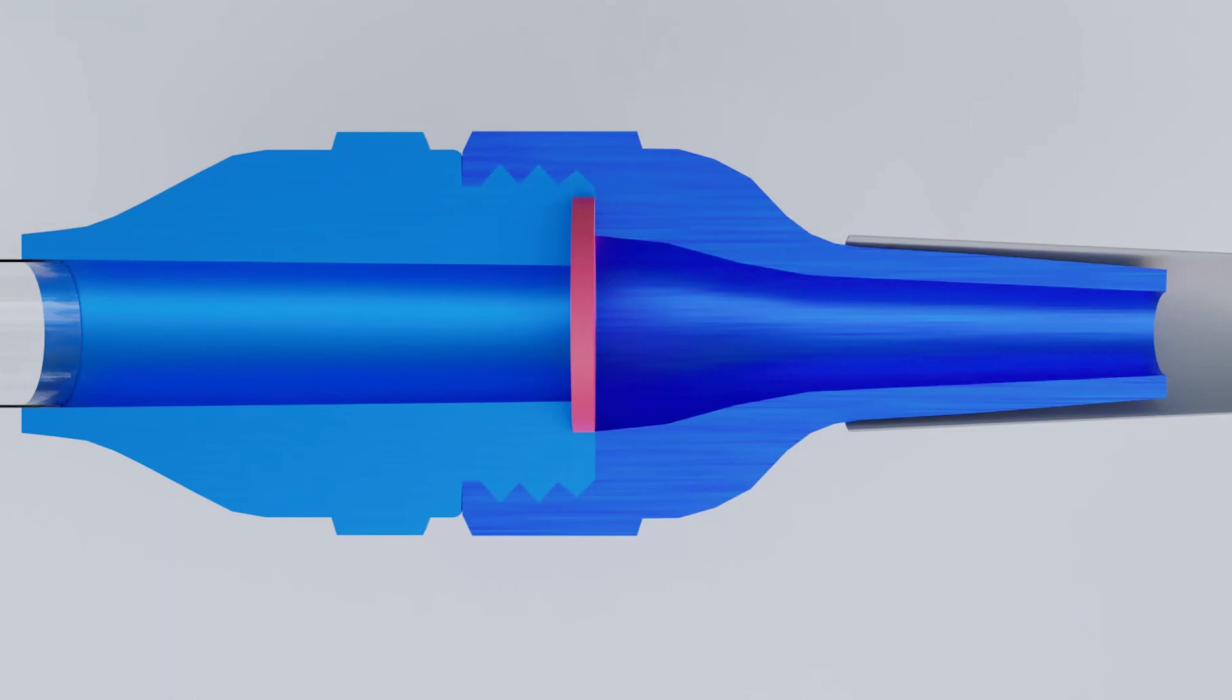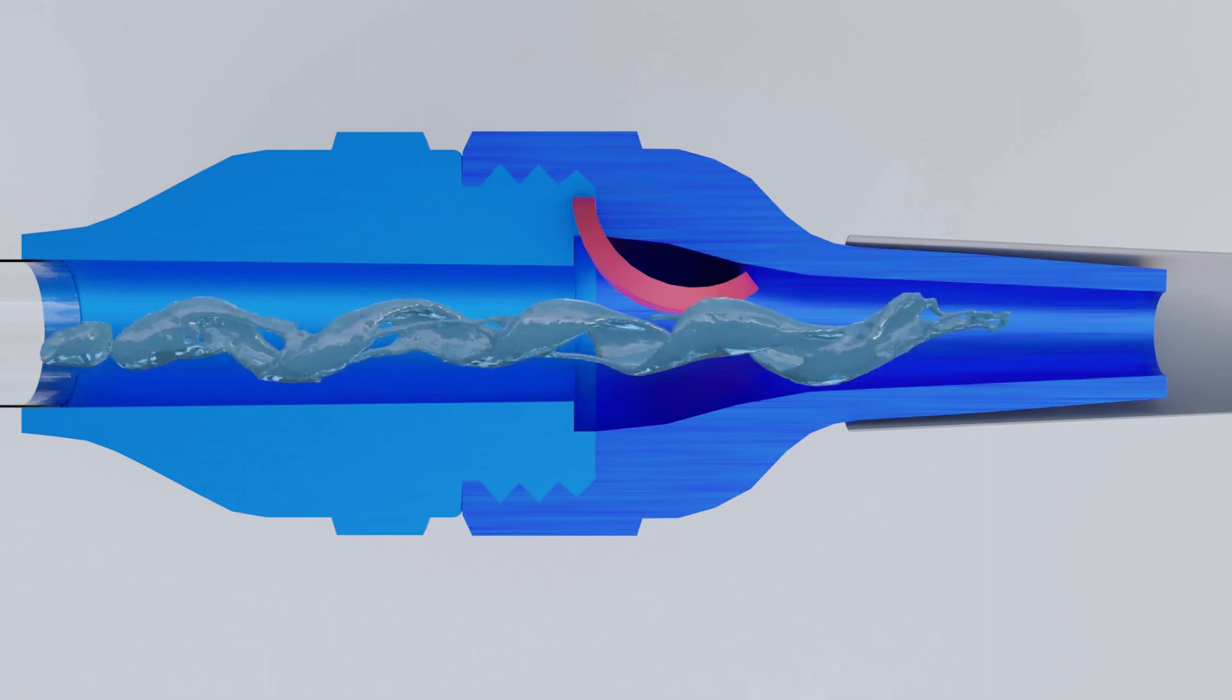When the valve is opened, the vacuum system draws air through the check valve in the low-volume evacuator. During operation, the check valve opens in the direction of air and fluid flow and remains open.